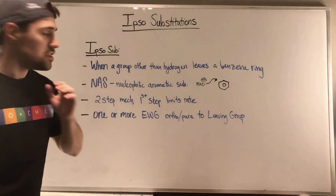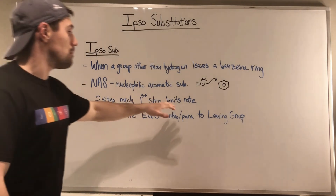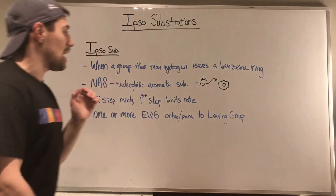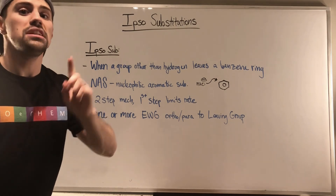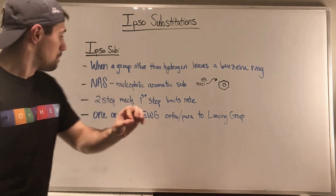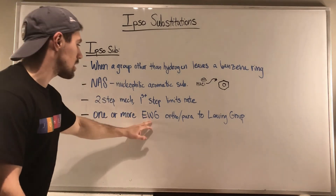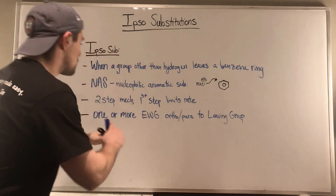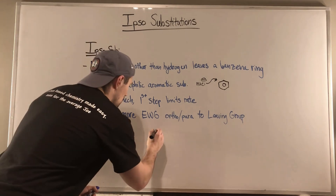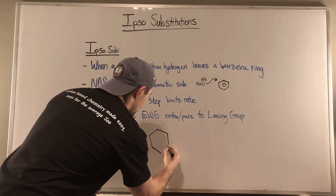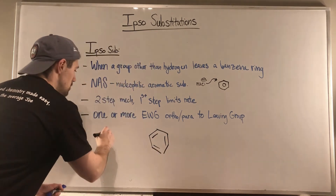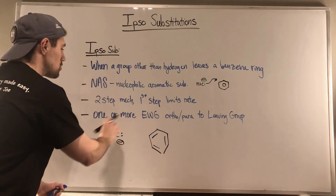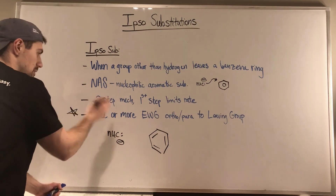One thing to note is that this is a two-step mechanism, and the first step is the rate-limiting step. Here's the most important part: we can only do Ipso Substitutions when we have one or more electron-withdrawing groups ortho or para to the leaving group. This is what you're always going to look for when doing an Ipso Substitution, and clearly you're also going to need some nucleophile.